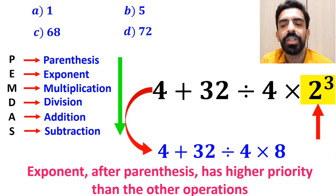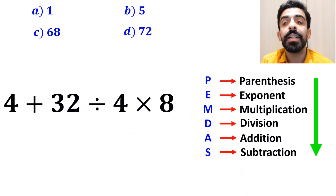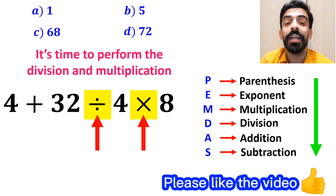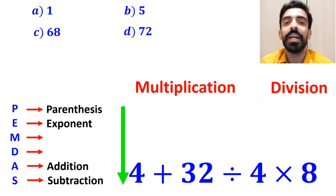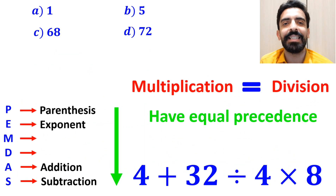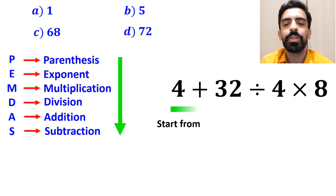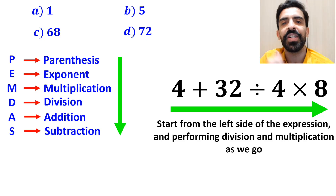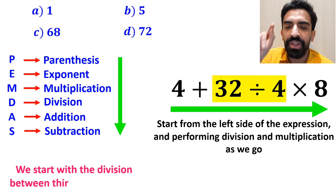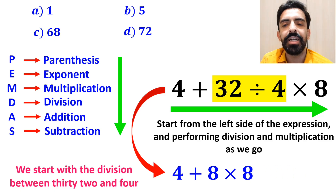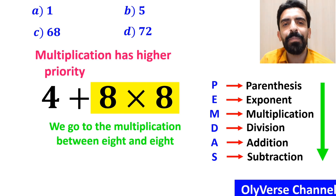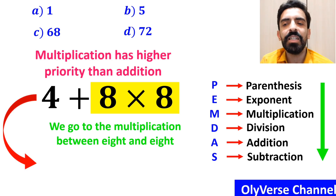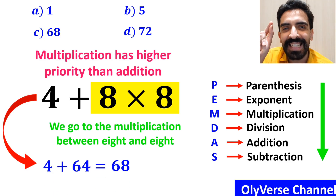Now it's time to perform the division and multiplication, because multiplication and division have higher priority than addition. However, we must pay close attention that multiplication and division have equal precedence. In this case, the best thing to do is to start from the left side of the expression performing division and multiplication as we go. So we start with the division between 32 and 4, giving us 4 plus 8 multiplied by 8. Finally, we go to the multiplication between 8 and 8, which simplifies to 4 plus 64, ultimately giving us the answer 68.